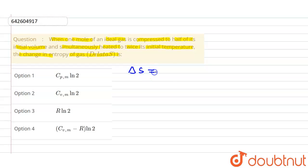So basically, what is the formula of delta S? Delta S, that is entropy change, the formula is basically nCv ln(T2/T1) plus nR ln(V2/V1). So we have to put this formula now.